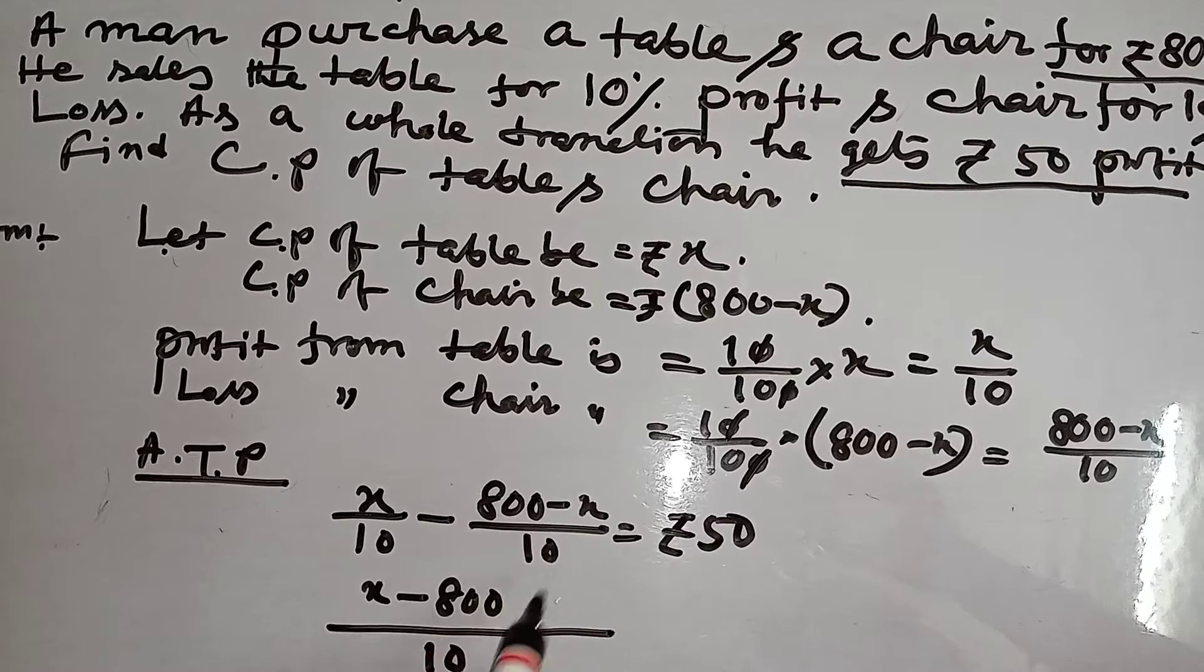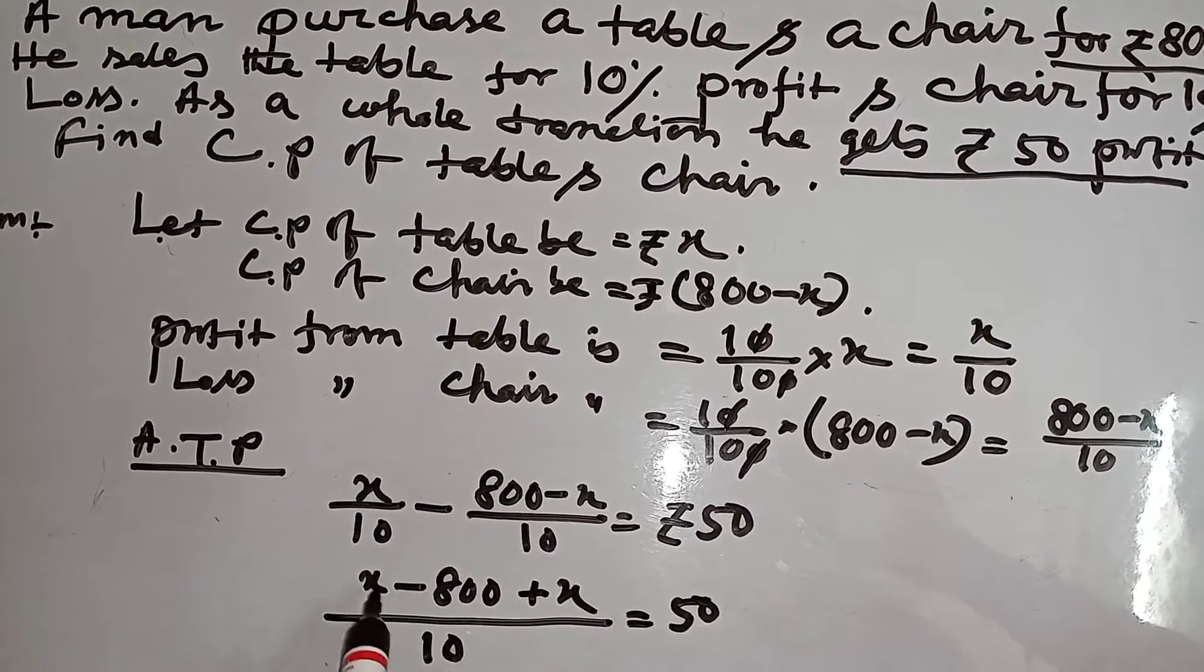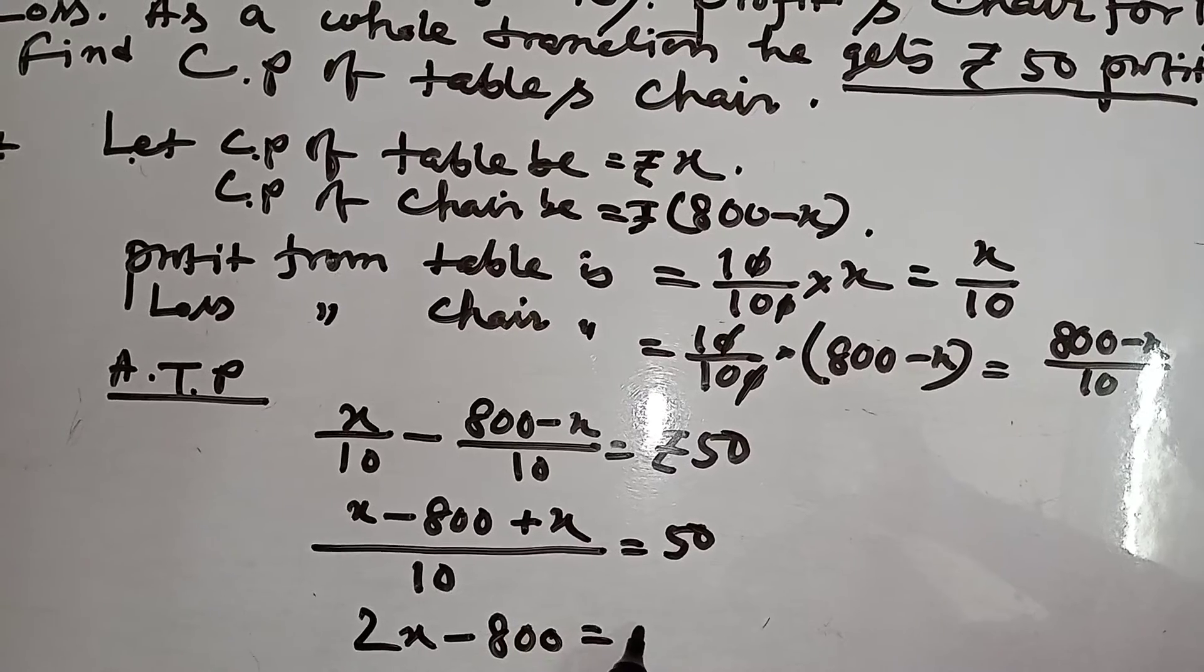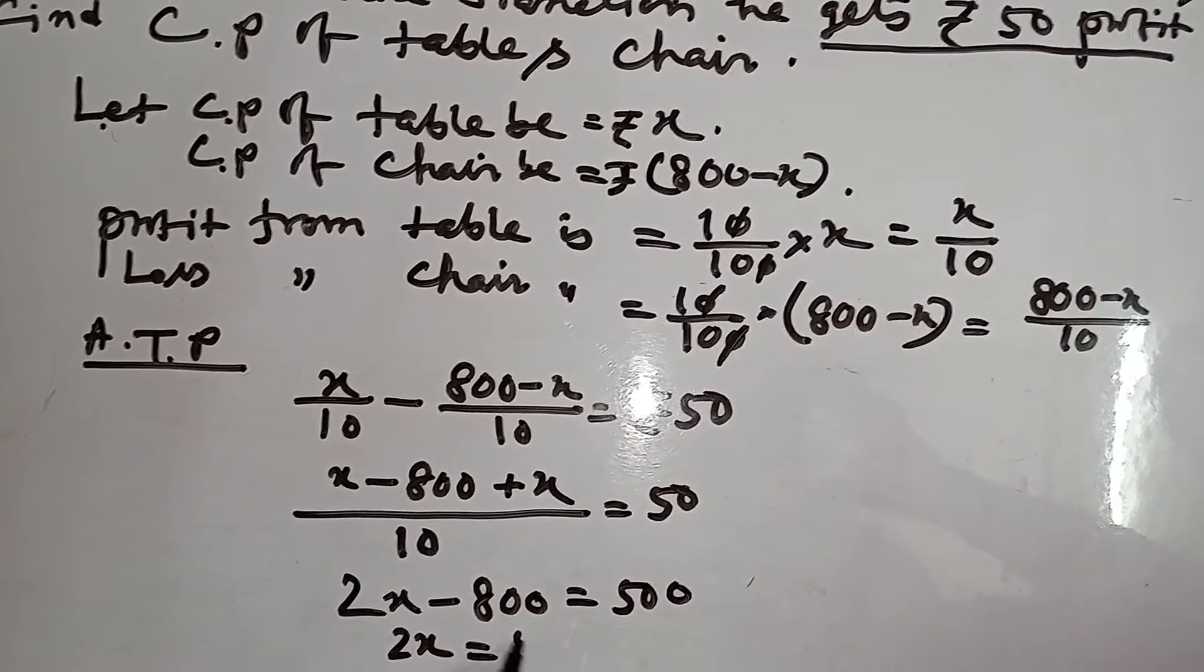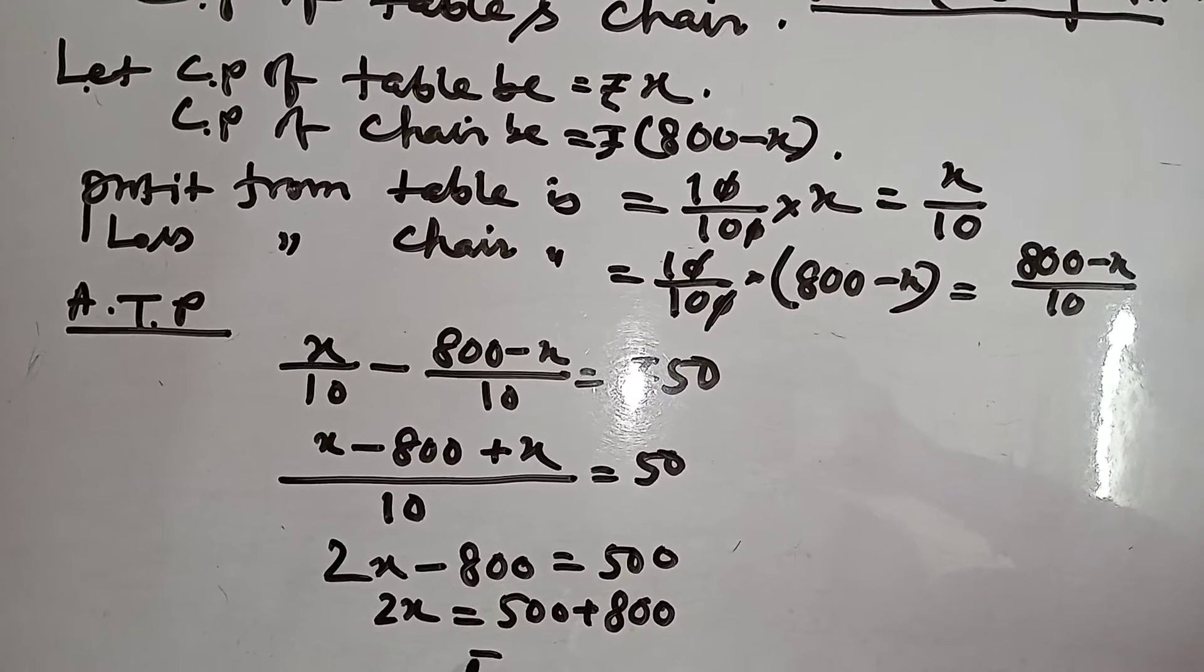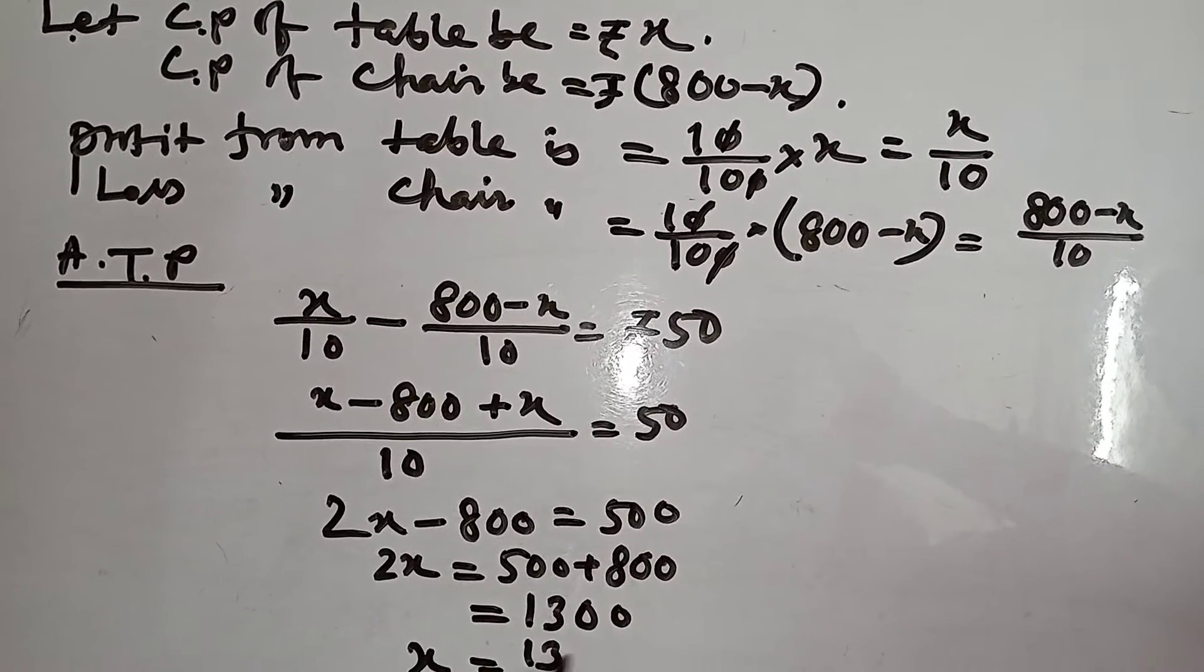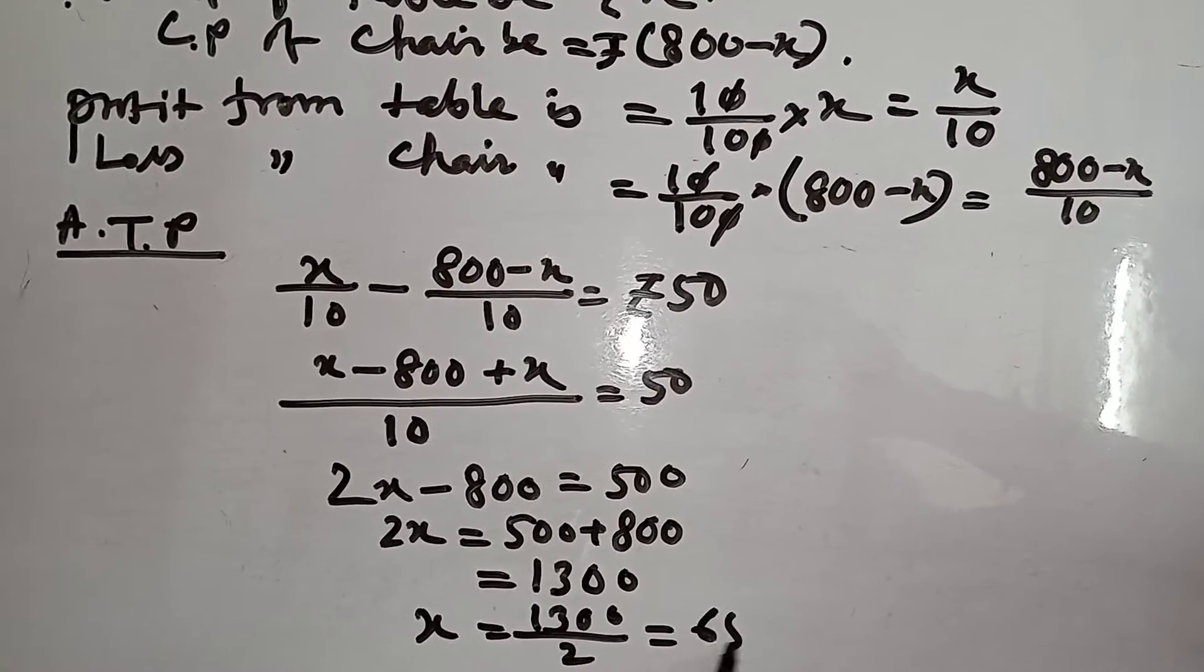2X minus 800 equal to 500. 2X equal to 500 plus 800 equal to 1300. X equal to 1300 by 2, that means 650 rupees.